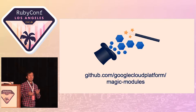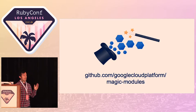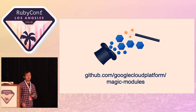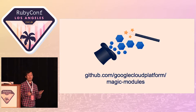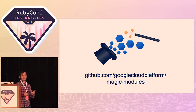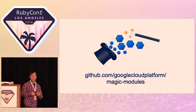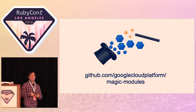So we actually went about building a code generator called Magic Modules. It's on GitHub, it's open source — GitHub.com/GoogleCloudPlatform/MagicModules. Magic Modules is a Ruby-based code generator that takes in some information about Google Cloud and spits out actual Ruby code that we contribute upstream to tools so they can interact with GCP. We've since extended it so now it also spits out some Python code shipped to Ansible, and some Go code shipped to Terraform.